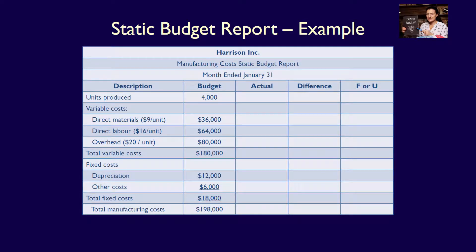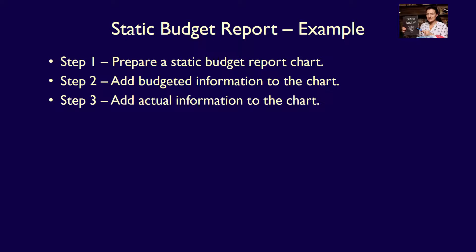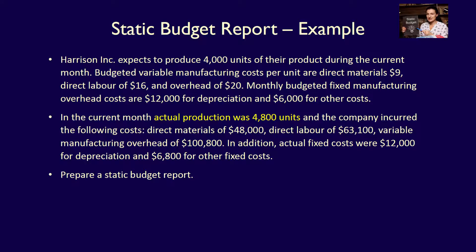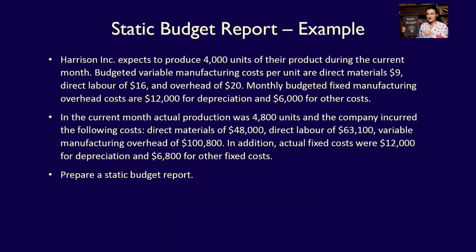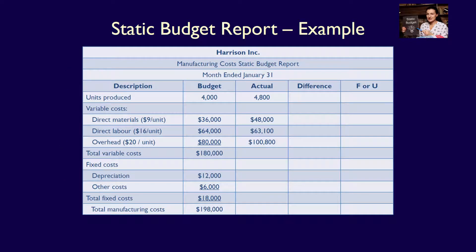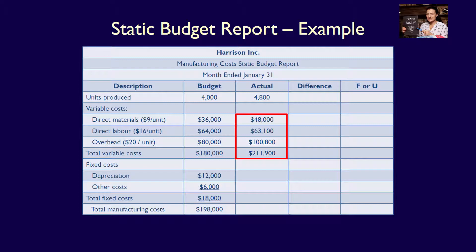We can now move on to Step 3: add the actual information to the chart. Actual production was 4,800 units. The actual variable costs are: direct materials $48,000, direct labor $63,100, and variable manufacturing overhead $100,800. Total actual variable costs are therefore $48,000 + $63,100 + $100,800 = $211,900.